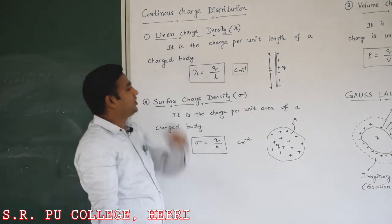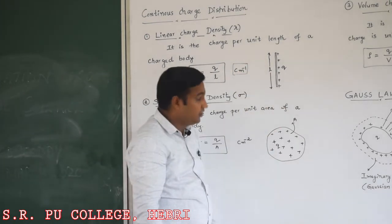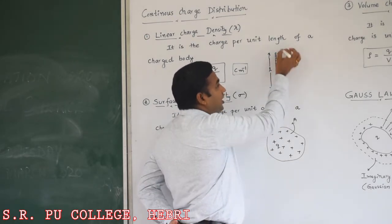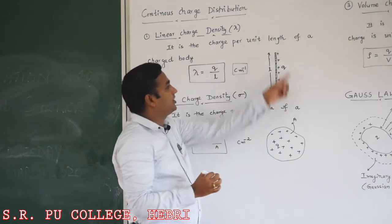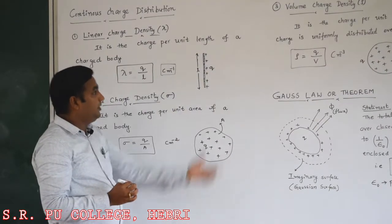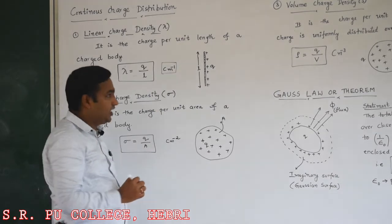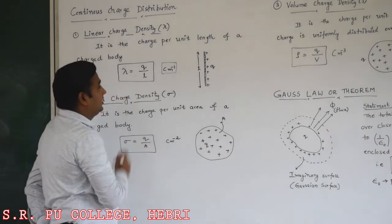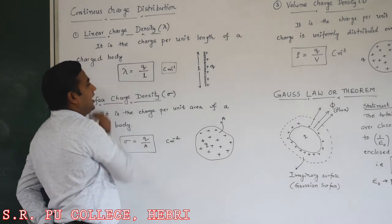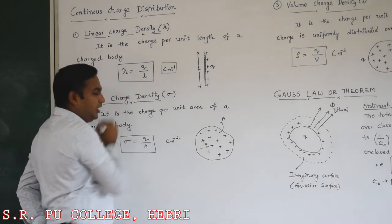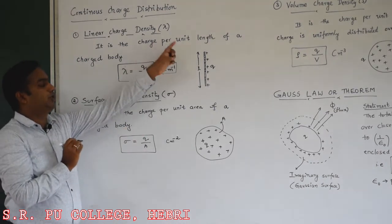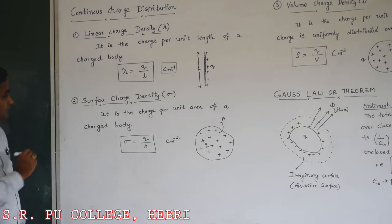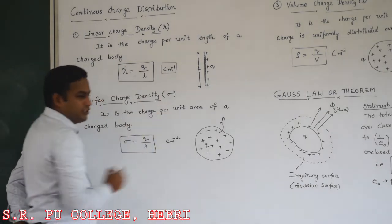We can understand linear charge density using this diagram. We consider one charged conductor or charged rod having a charge Q — all the charges are located on the surface of a conductor. The length of this conductor is equal to L. So linear charge density lambda equals Q divided by L, that is total charge per unit length of a charged body.